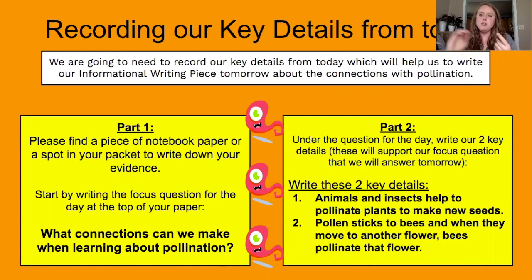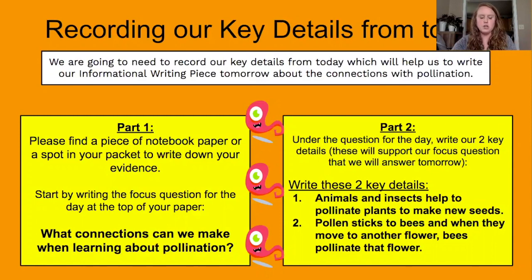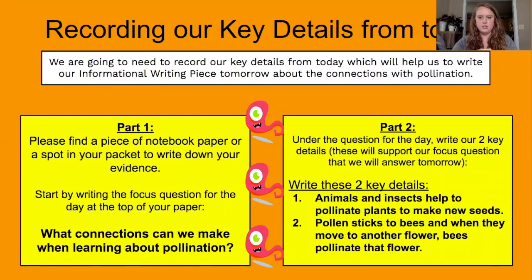The kids would typically write in the top of their notebook the question for the day — which was, 'What connections can we make when learning about pollination?' And then under it, they had to write the key details, because they were going to use those key details to write about pollination and the connections between them. Similar to what we would do at school — kids taking notes, writing the date at the top, keeping work nice and organized. I would even model that for them, showing them in a notebook how they could write it down so that they had a model.